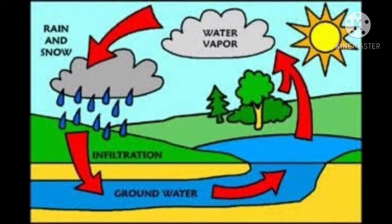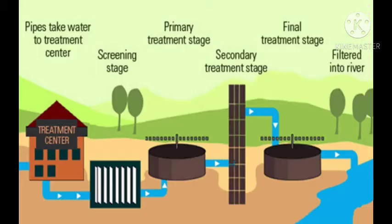Water falls on the earth as rain. Rainwater collects in rivers, ponds, and lakes. This water is cleaned in waterworks and is then supplied to our homes through water pipes. We take it from taps.